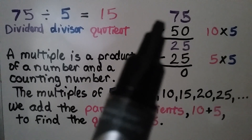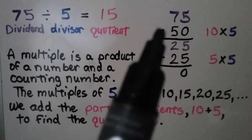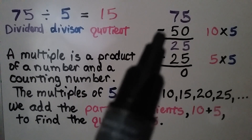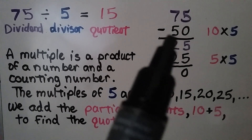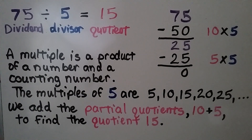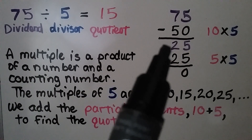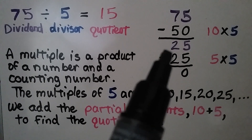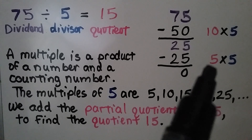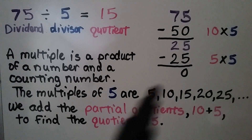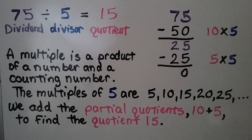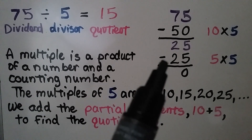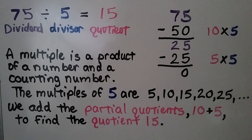We have 75, our dividend, and we think of a nice big multiple of 5 that we can subtract. So we think of 10 times 5 is 50. Our difference is 25. And we think, what times 5 is 25? Well, that's 5 times 5. So we subtract that and our difference is 0. Our multiples were 50 and 25, and we get our quotient 15.